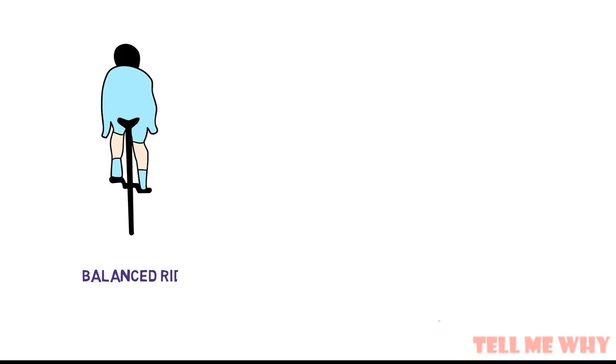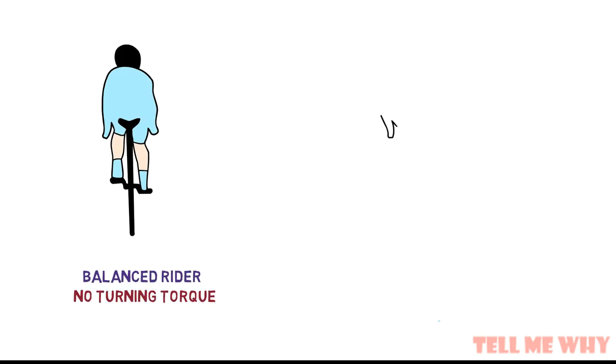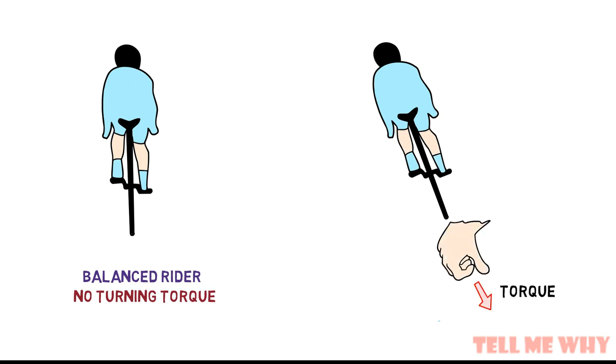Same is the case with the motorbike. A balanced rider produces no turning torque. But when a rider leans to the left, a torque will be produced to the rear of the motorbike, as seen from the right hand rule. This gives a rearward change in the angular momentum vector, turning the motorbike in the left direction.